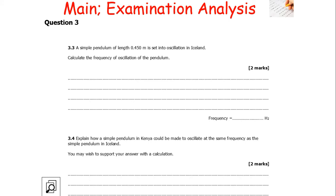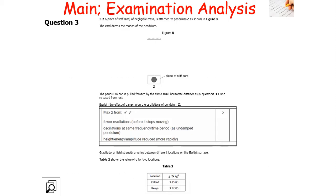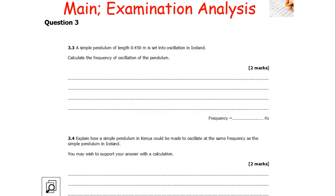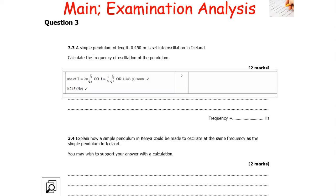A simple pendulum of length 0.450 metres is set in oscillation in Iceland. We need to calculate the frequency. We use T = 2π√(L/G), with the value of G from table 2 for Iceland. We work out the time period, then since frequency = 1/T, we calculate the frequency to be 0.745 Hz.